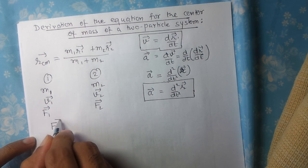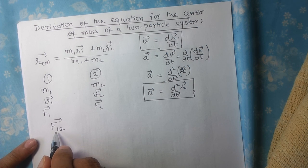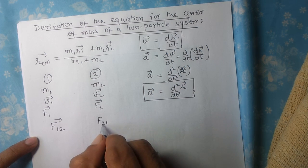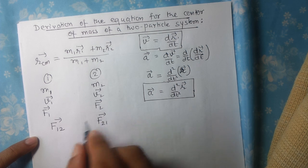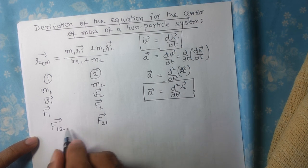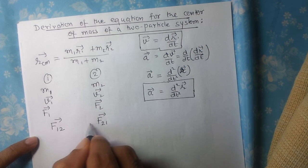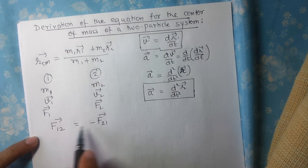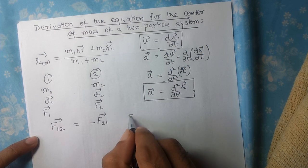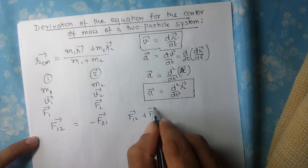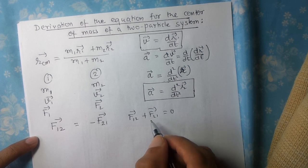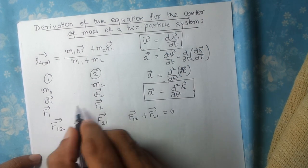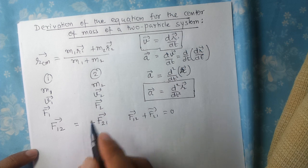Now apart from these external forces F1 and F2, there will be internal forces acting on them — for example, F12, the internal force acting on body 1 applied by body 2, and F21, the internal force acting on body 2 applied by body 1. But by Newton's third law of motion, the internal forces cancel out each other because F12 equals minus F21 — they are equal and opposite. So F12 plus F21 equals zero, and therefore we will not consider them in this derivation. We will focus only on the external forces.